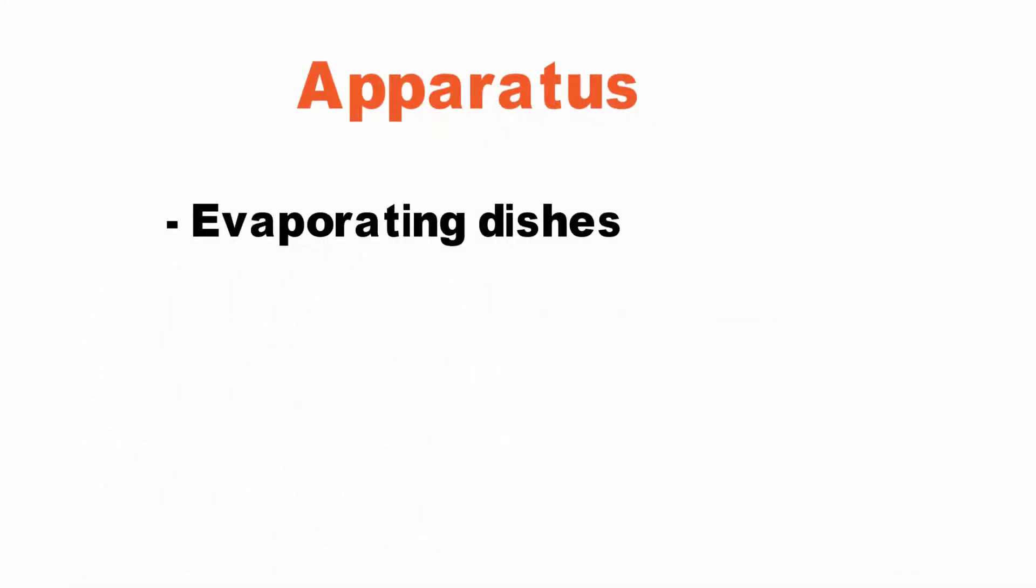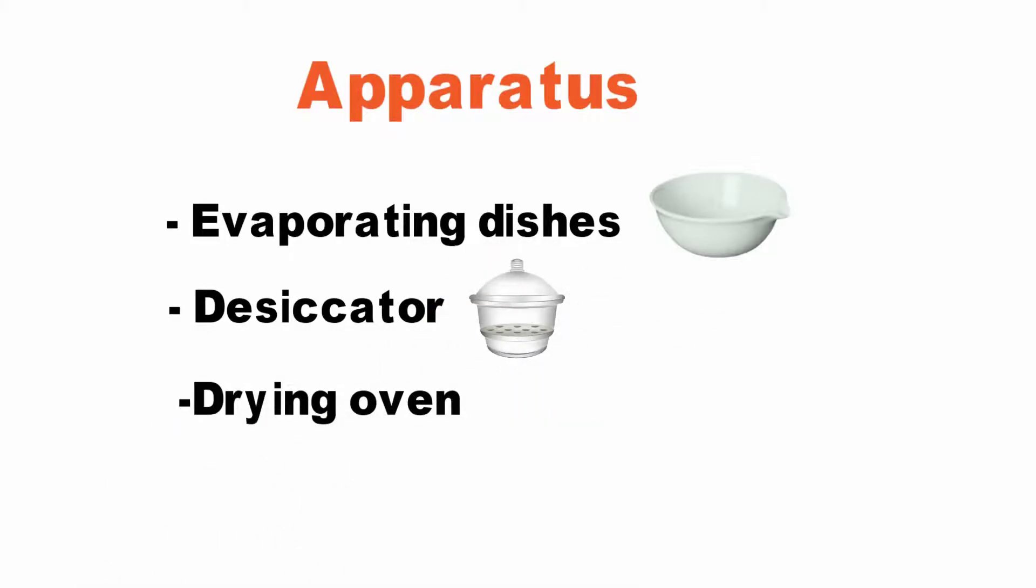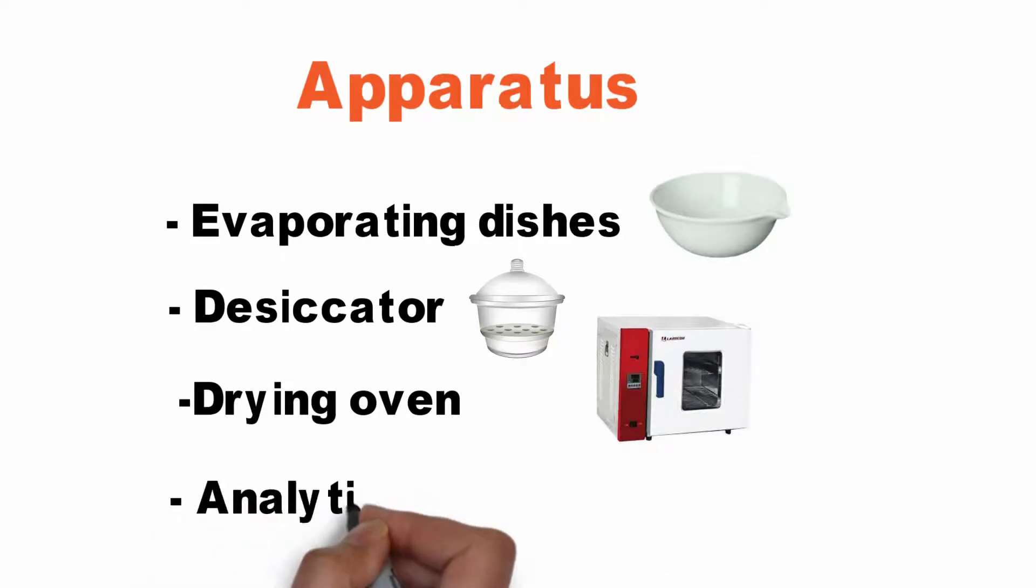Now here is the apparatus that you need for your total solids test. First, you need evaporating dishes, and second, you need a desiccator. Next, you need a drying oven, and last, you need an analytical balance.